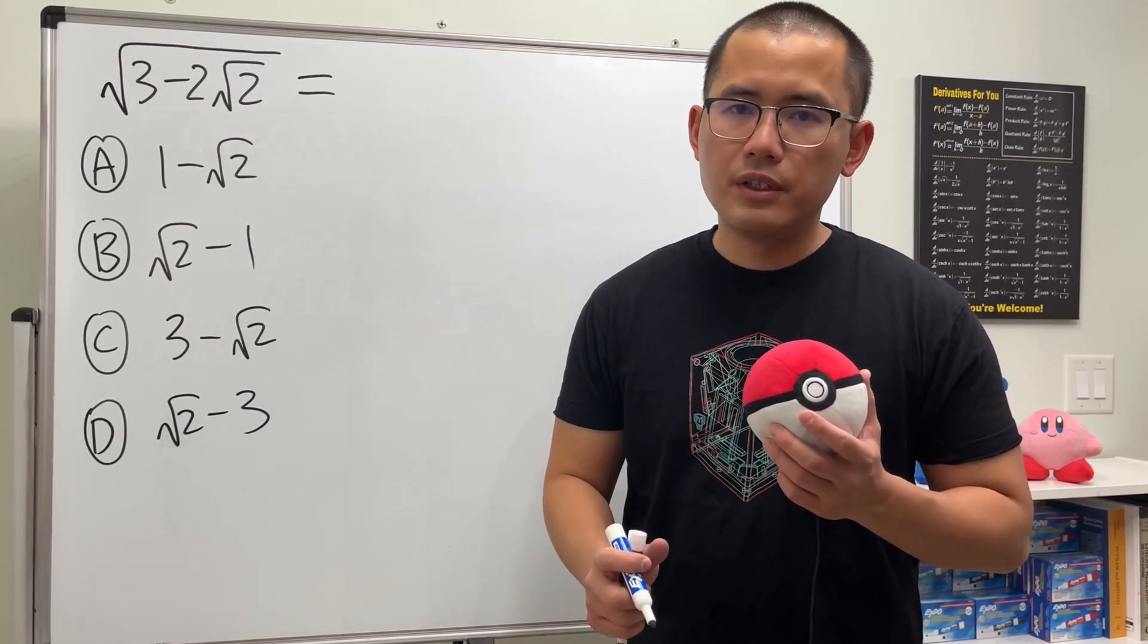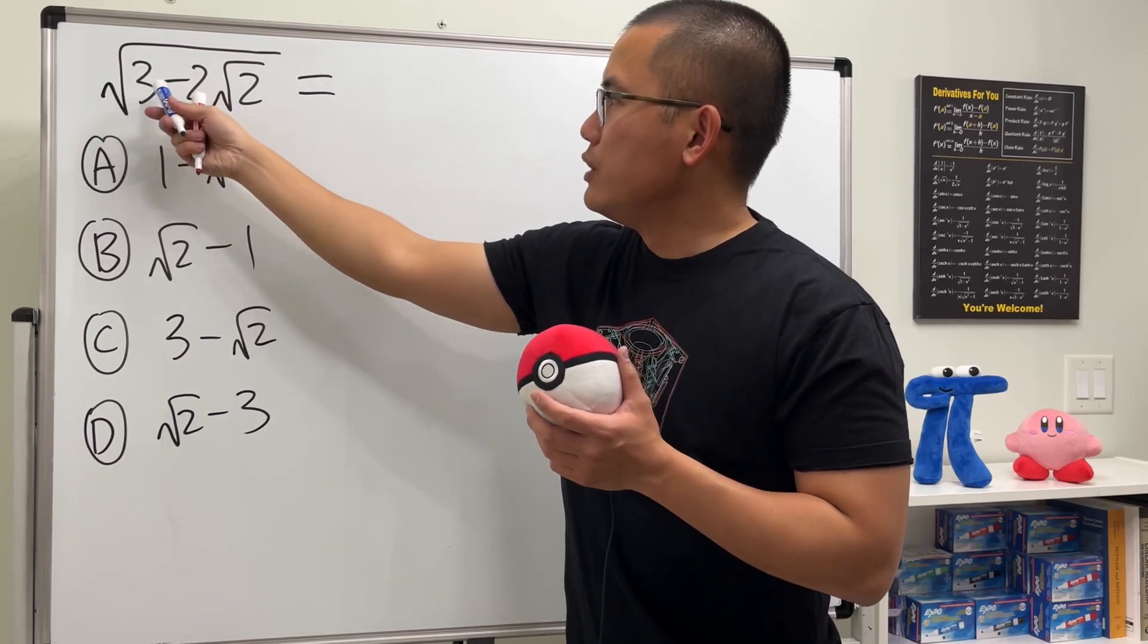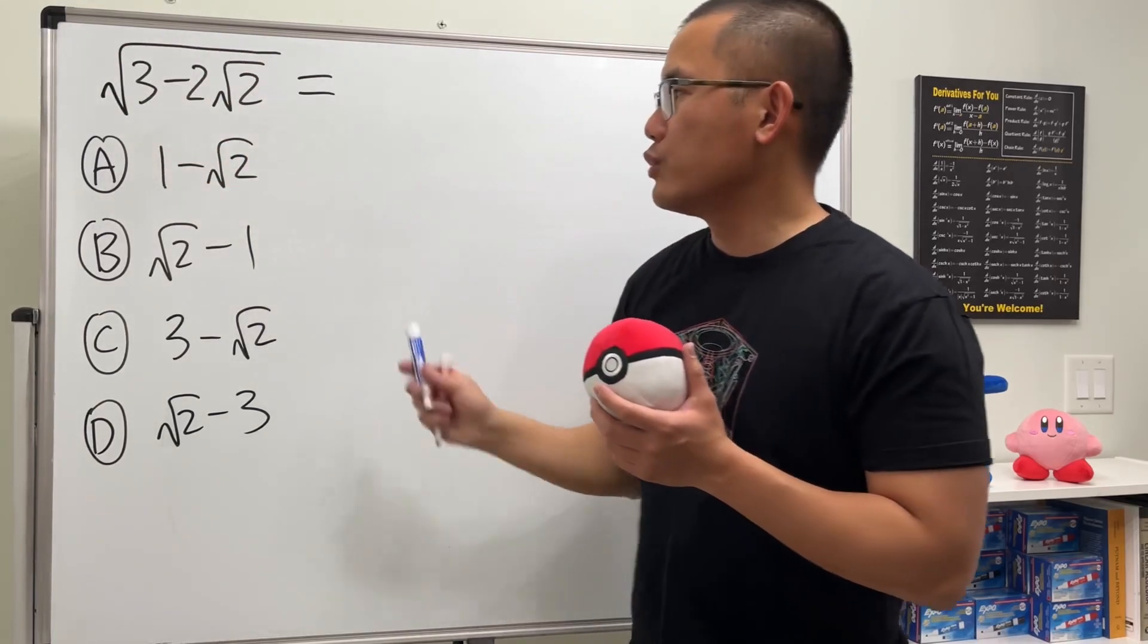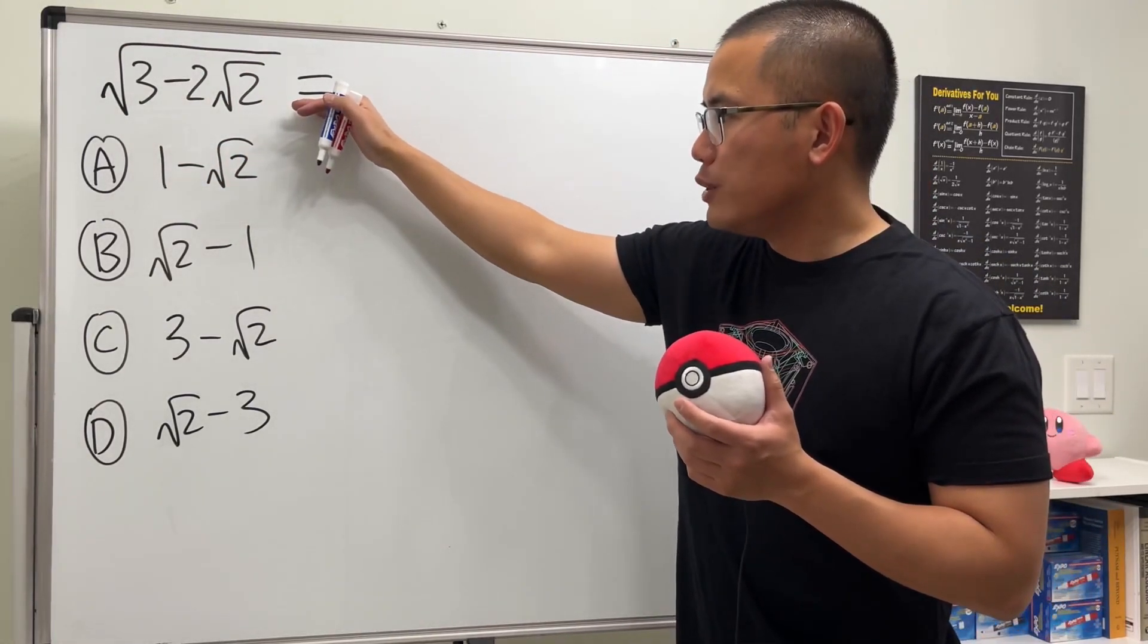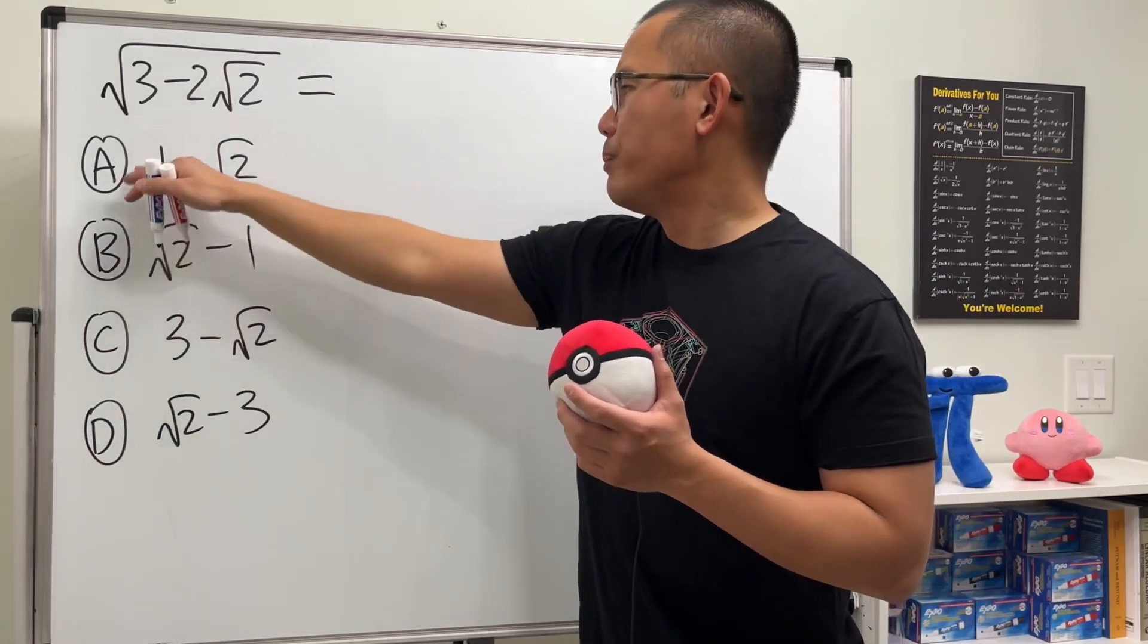Here is the discussion for this video. When we are given this nested square root, we have 3 minus 2√2 inside of that big square root. This can actually be simplified into one of these, and you see there's no more big square roots.